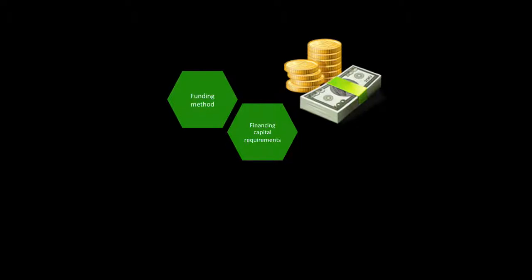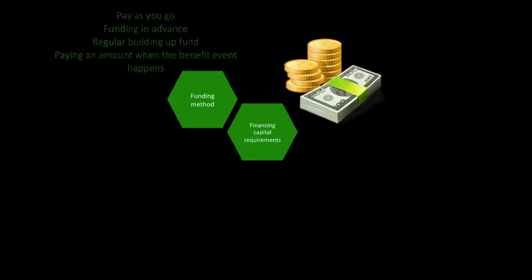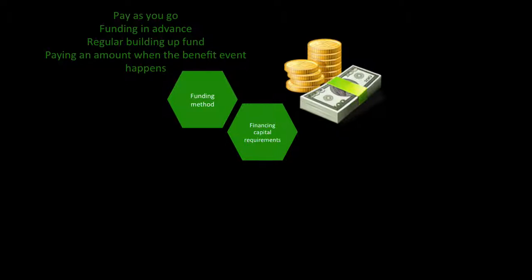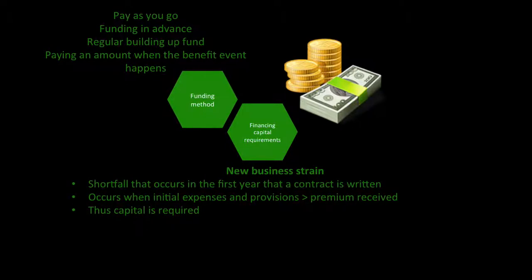For funding methods and financial capital requirements: funding methods include pay-as-you-go, funding in advance with regular build-up of funds, or paying an amount when the benefit event happens — there is a whole chapter on this later. For financial capital requirements, there is new business strain: a shortfall that occurs in the first year a contract is written. It occurs when initial expenses and provisions are greater than the premium received, meaning capital is required.